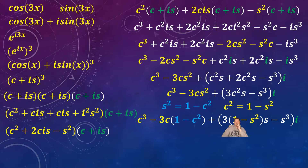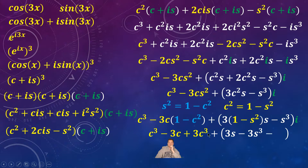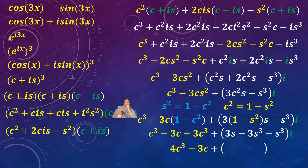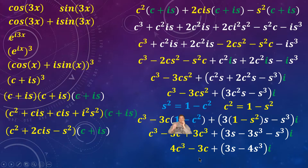Now I can simplify further. Distributing: c cubed minus 3c plus 3c cubed for the real part, and for the imaginary part 3s minus 3s cubed minus s cubed. Combining: the real part becomes 4c cubed minus 3c, and the imaginary part becomes 3s minus 4s cubed. So the result is: (4c cubed minus 3c) plus i(3s minus 4s cubed). The yellow part corresponds to cosine 3x, and it's essentially as simple as you can make it.